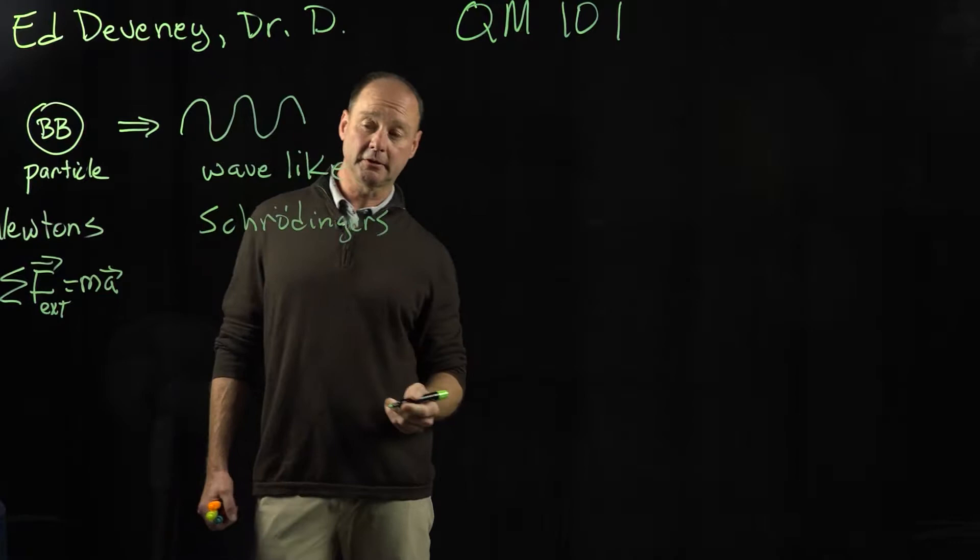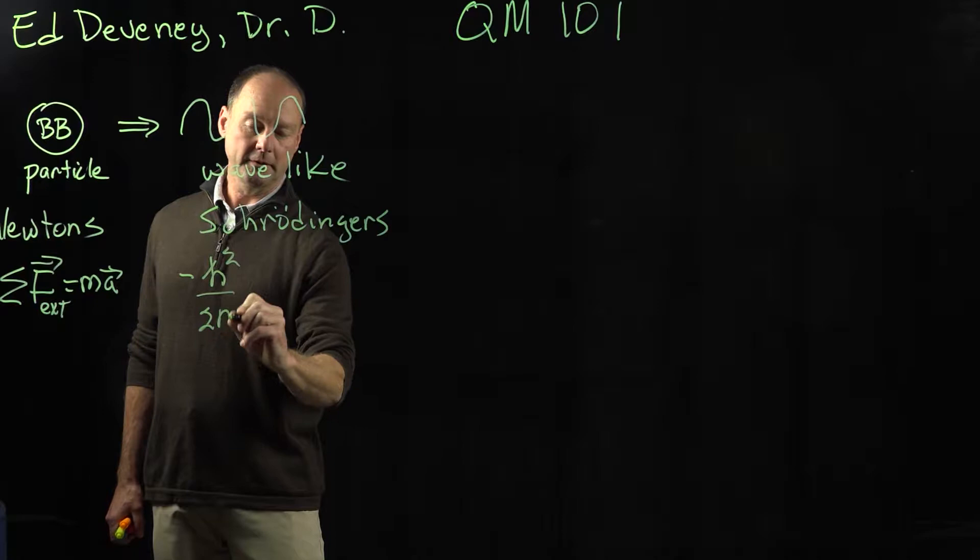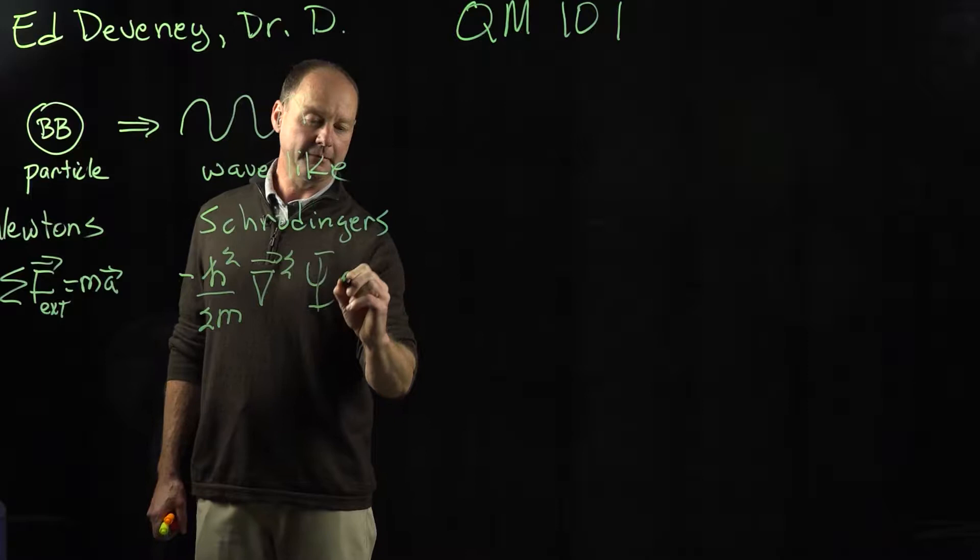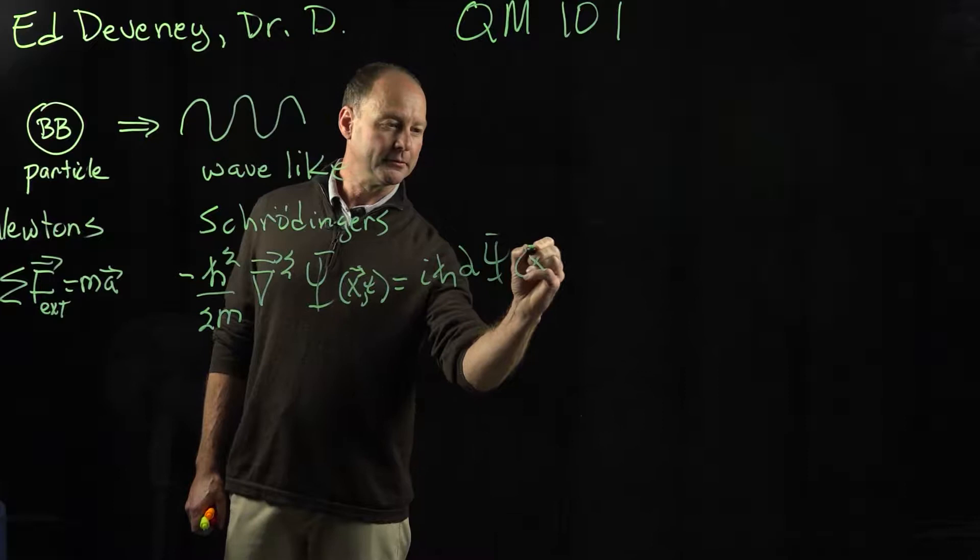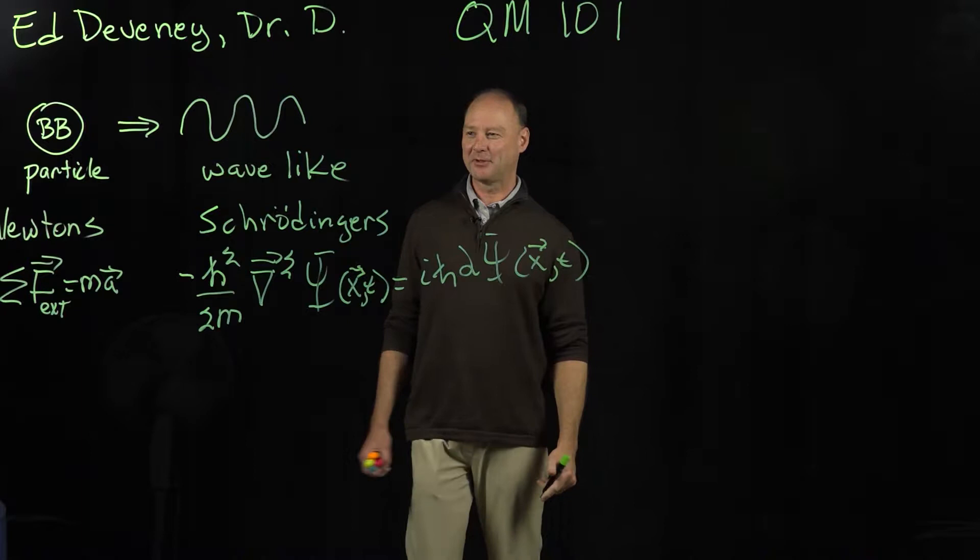Minus h-bar squared over 2m del squared of psi—this is called the wave function—of x and t, and that equals ih partial of psi of x and t. Well, I better make this a vector to be truthful. So this is the classical world that we're used to, and this is the world when things look like waves.